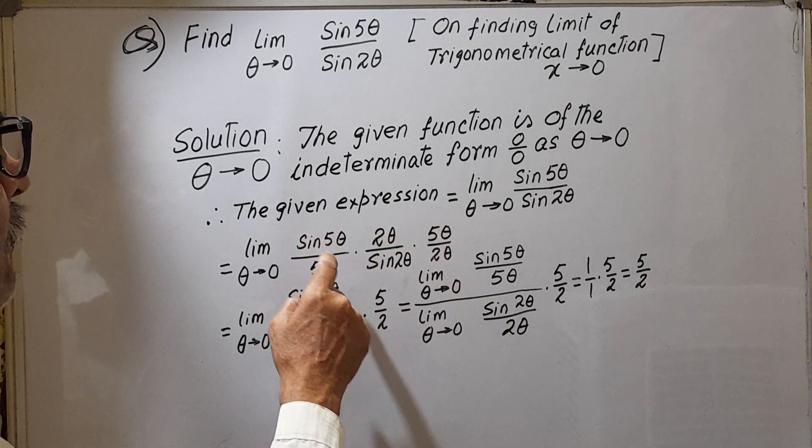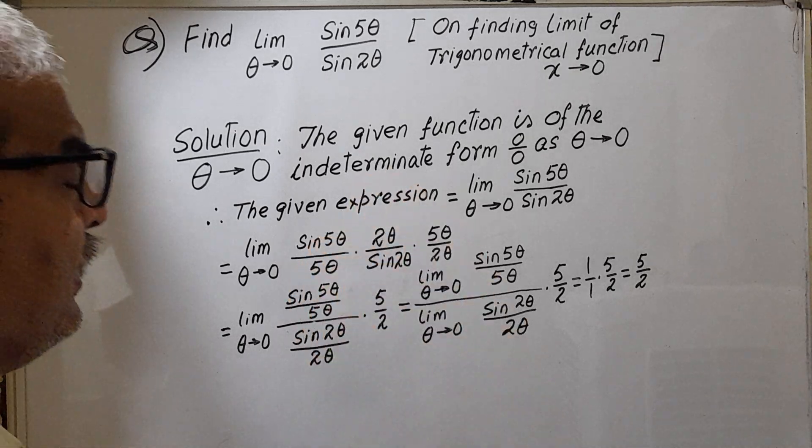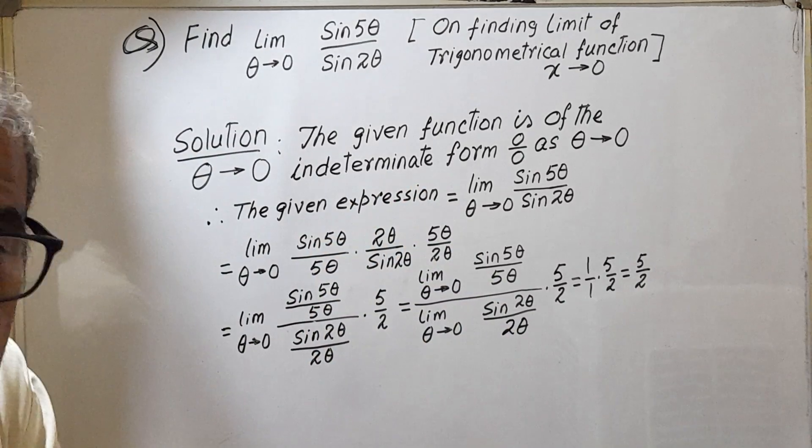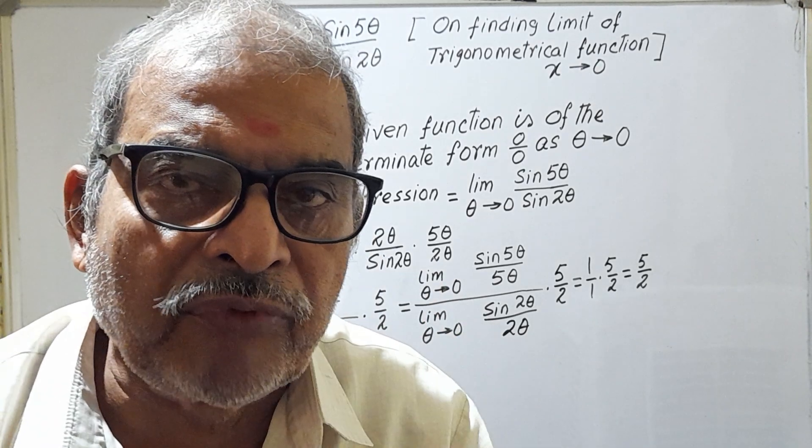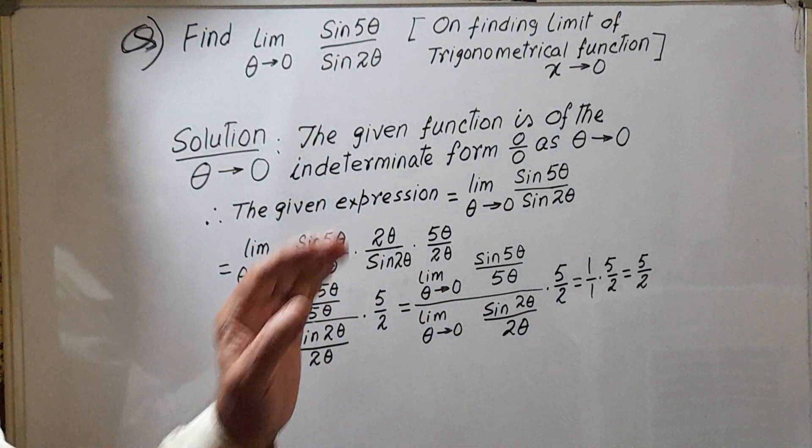Sin 5 theta by sin 2 theta, as a rule of mathematics, new line should be satisfied the previous line. This is the formula in mathematics. So it is satisfied.